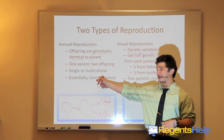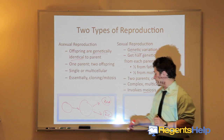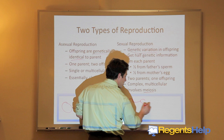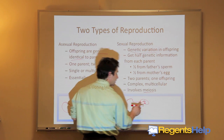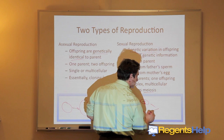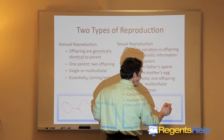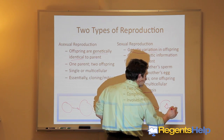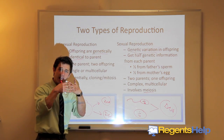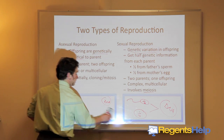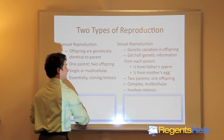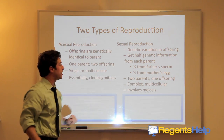Asexual reproduction is essentially cloning — essentially mitosis, which we'll learn about later. Sexual reproduction involves meiosis. You'll get a sperm with half the DNA and an egg with half the DNA; they come together to make a fertilized egg with all the DNA. Genetic variation happens because you have genes from both parents coming together to make a new set of genes. Key contrast: genetically identical versus genetic variation.